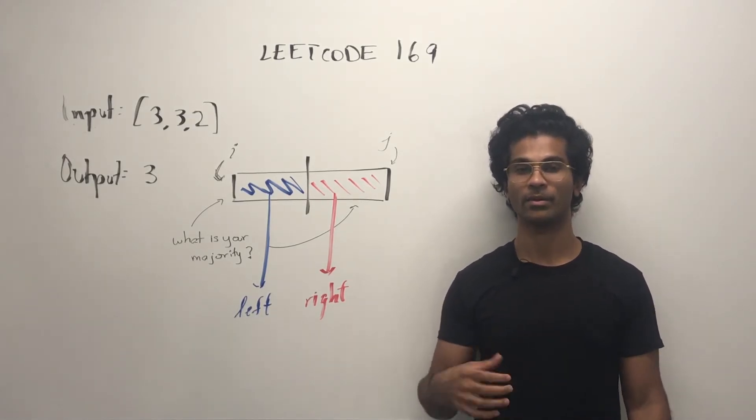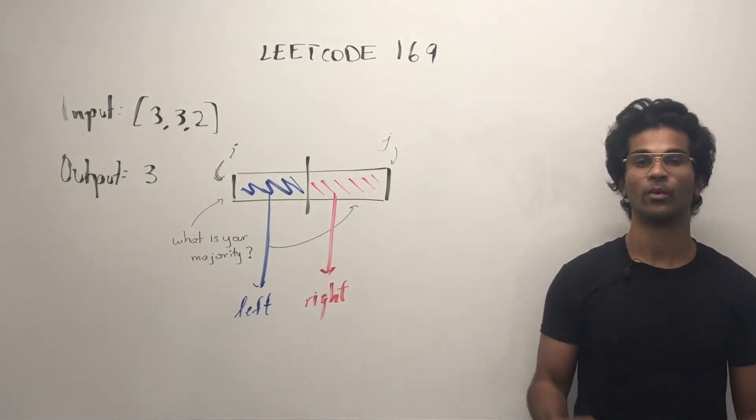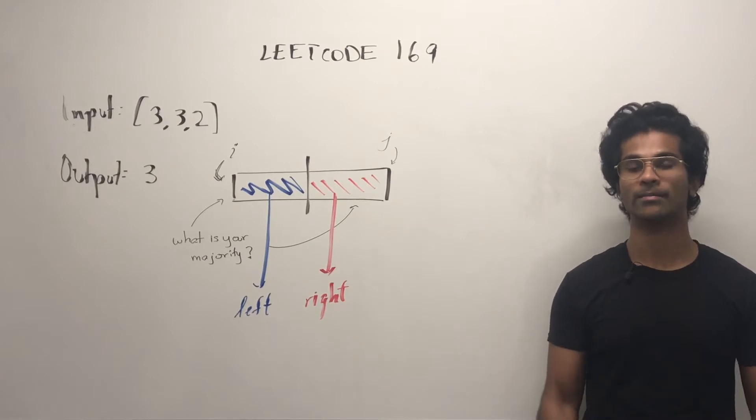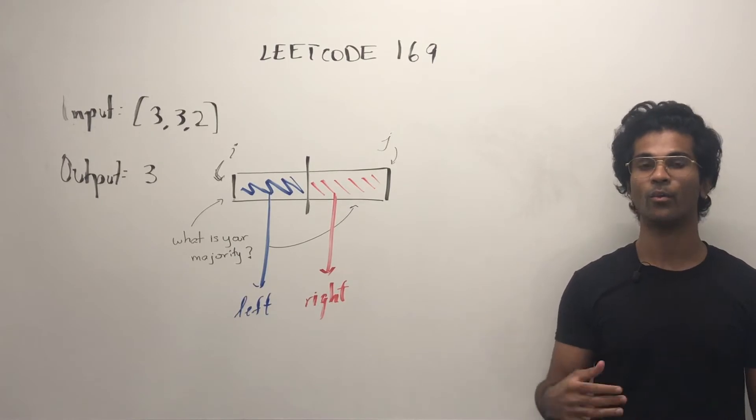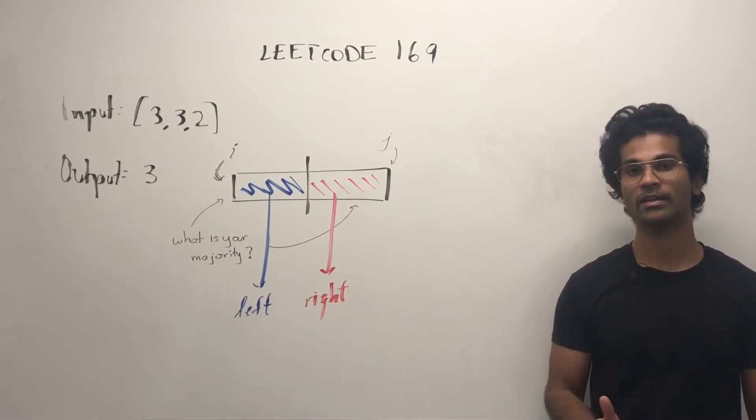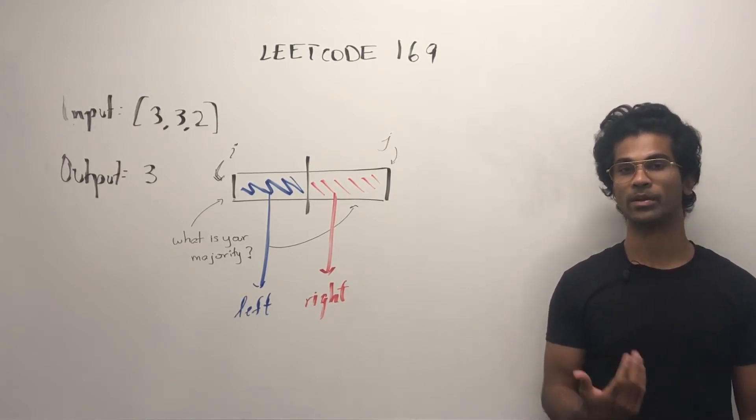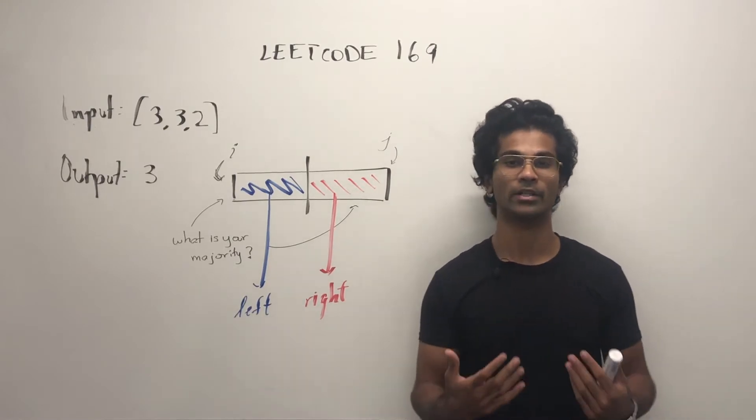We have to find the majority element. We're guaranteed that there is going to be a majority element, which means a number that appears more than half the times in the array, where n is the length of the array, so we need to find a number which appears at least n by two times.